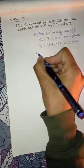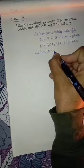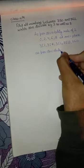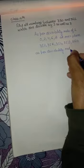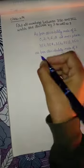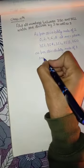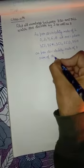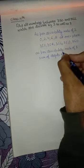As per the divisibility rule of 3, we have to calculate the sum of digits of each number.